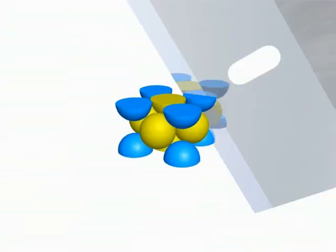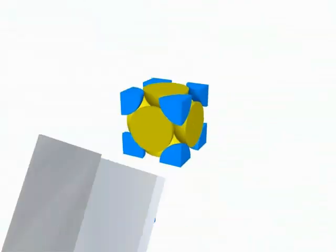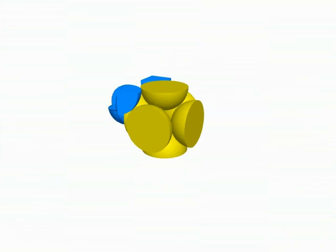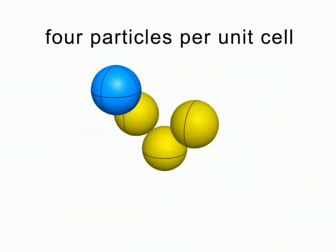The actual unit cell consists of portions of particles at the corners and in the faces. Eight-eighths at the corners gives one particle, and half a particle in each of six faces gives three more for a total of four particles.